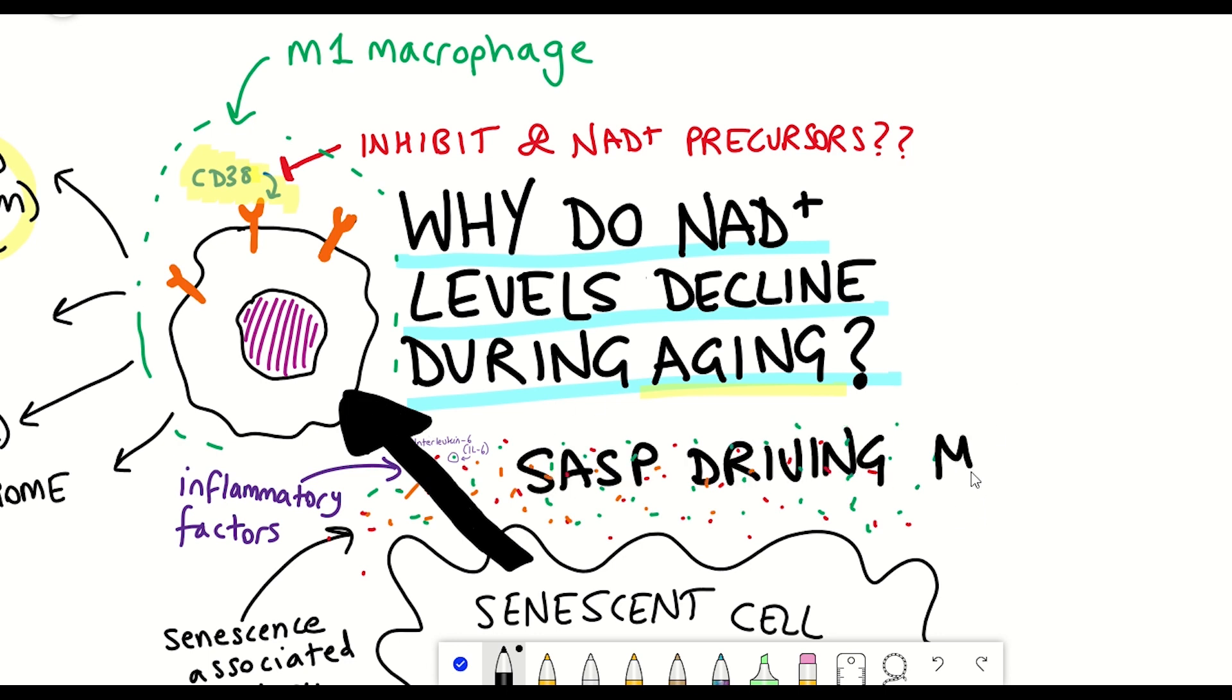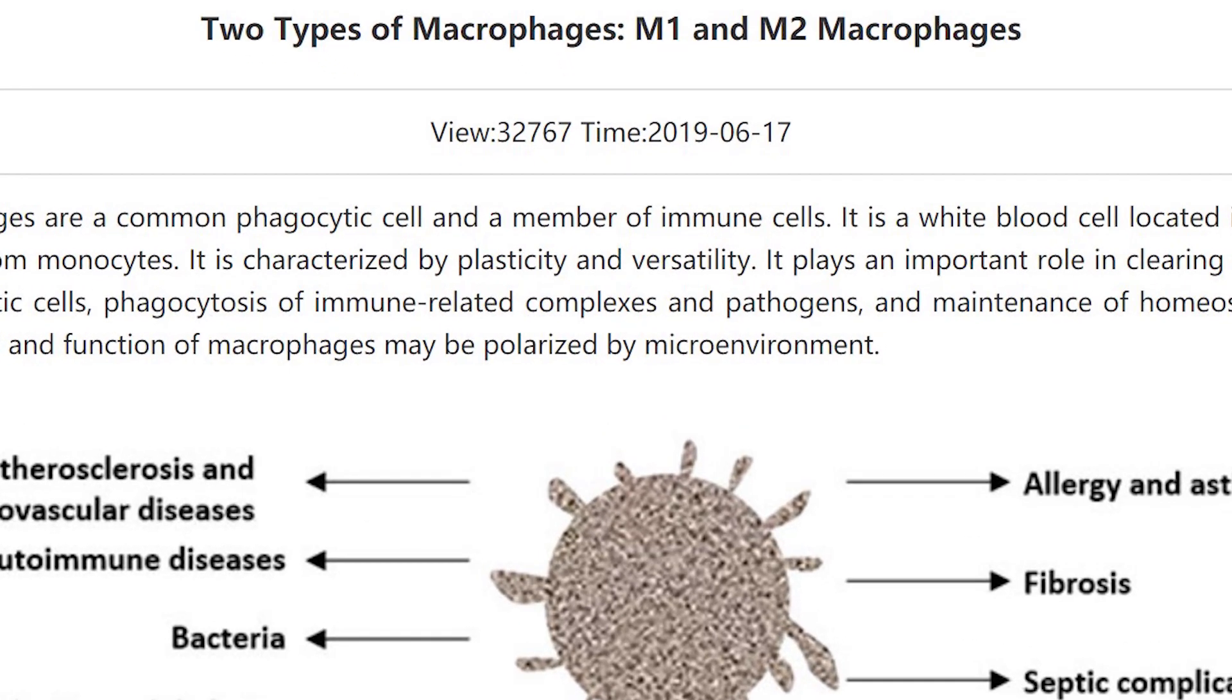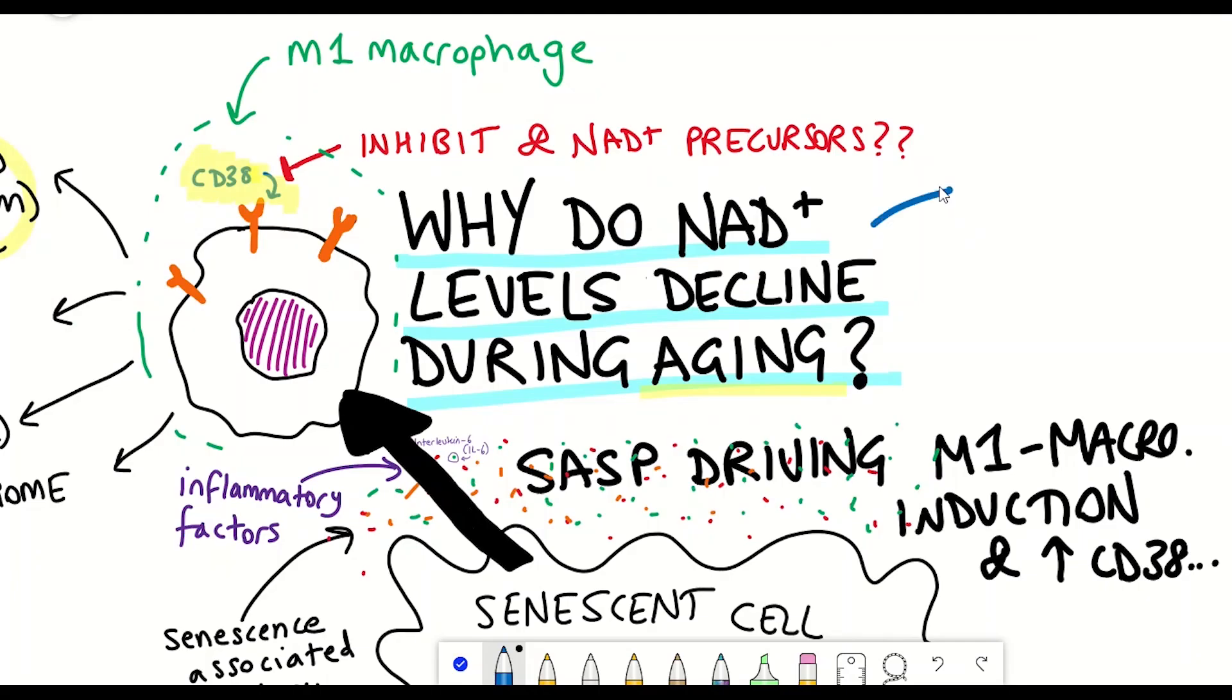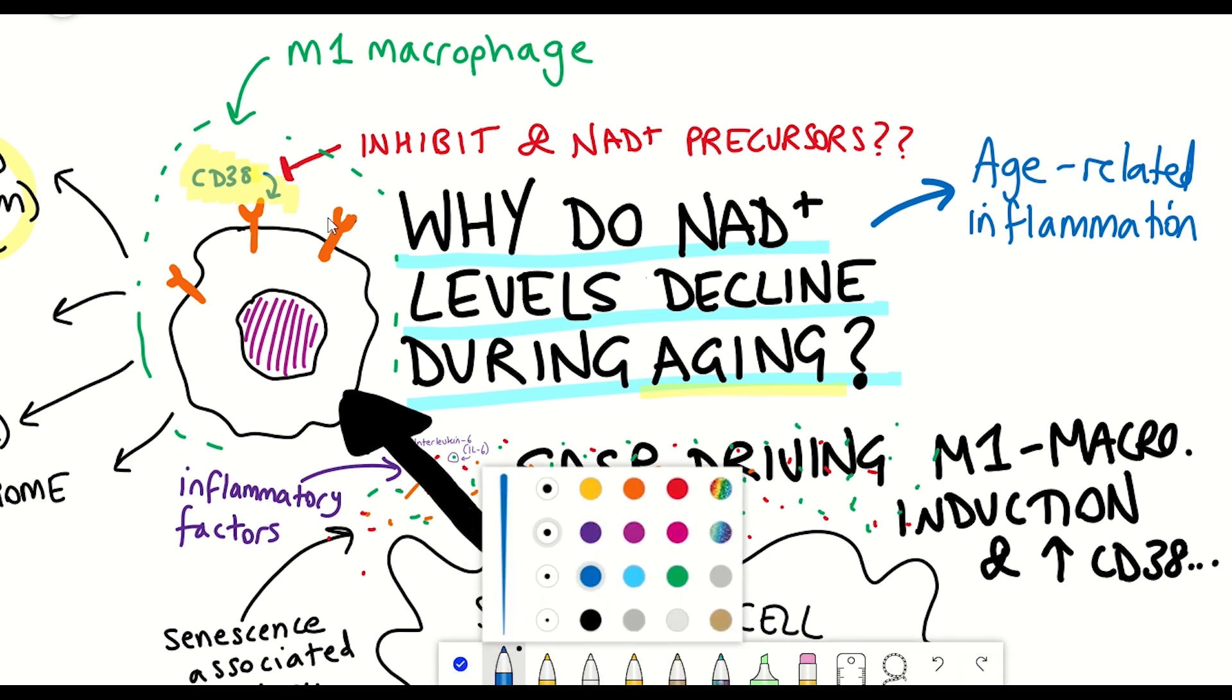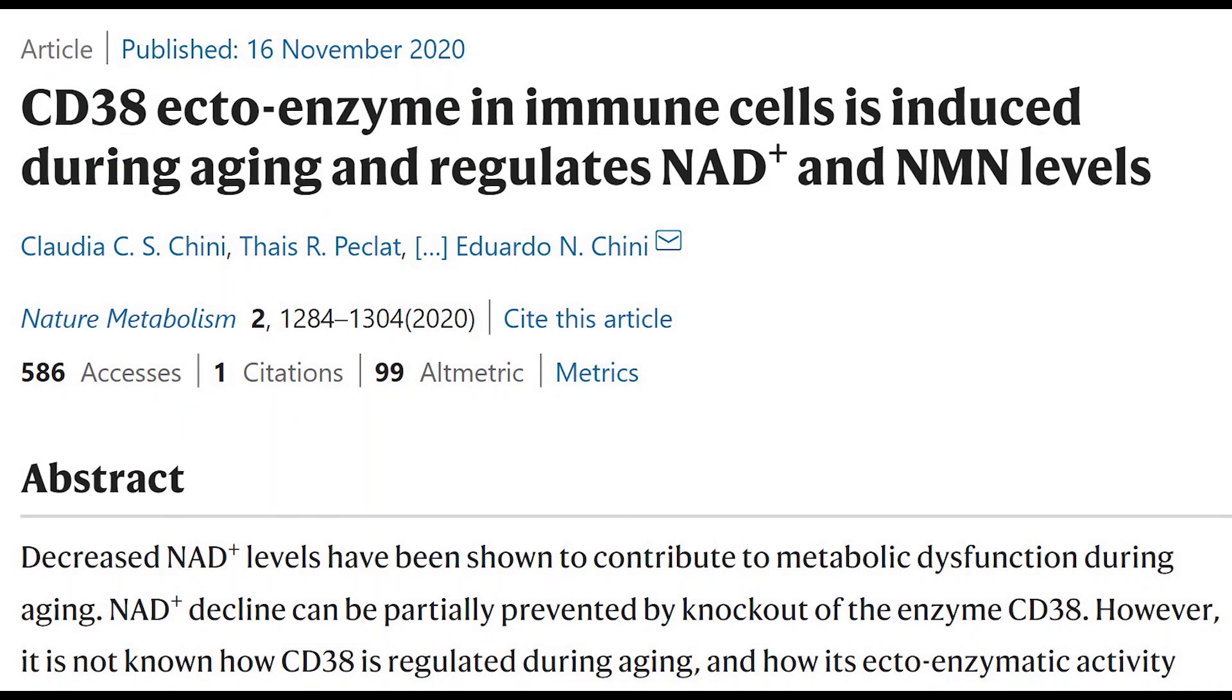Now if you're wondering what the M1 of M1 macrophage means, it just refers to the type of macrophage; there being M1 and M2 macrophages. A general take-home from this first publication is that aging-related inflammation is enhancing NAD degradation due to an increase in CD38 levels in M1 macrophages. Some of the findings within this first paper are validated by the second paper.